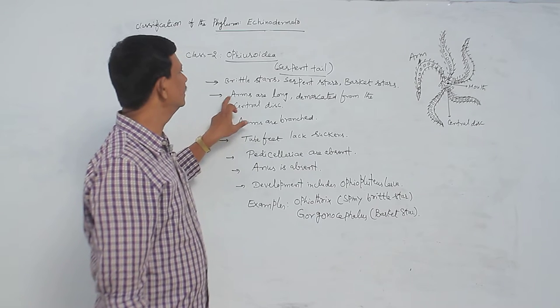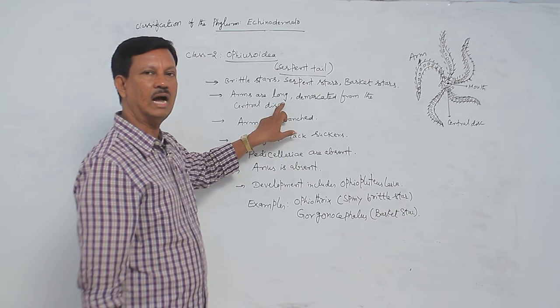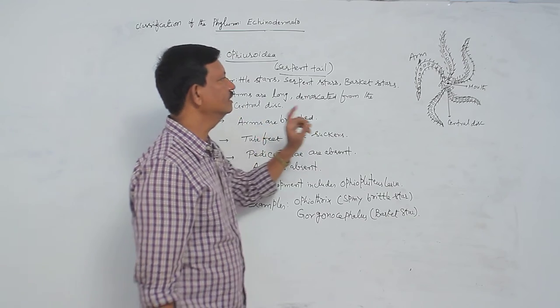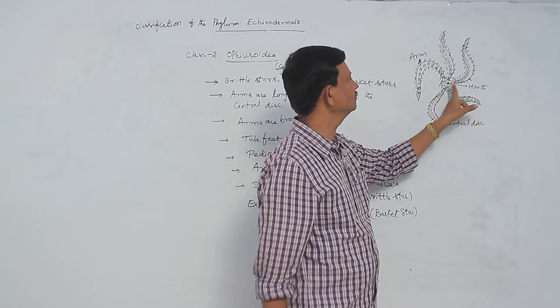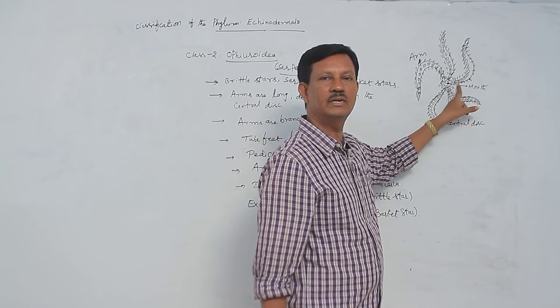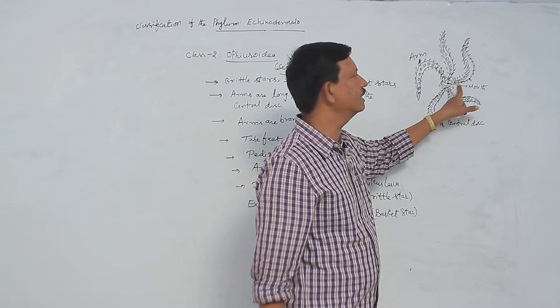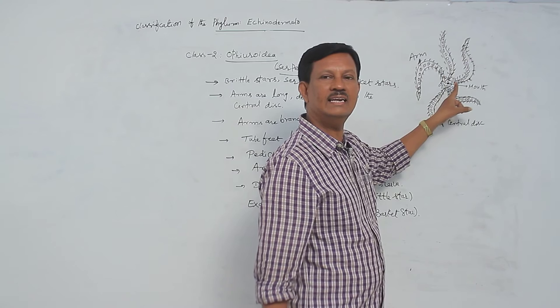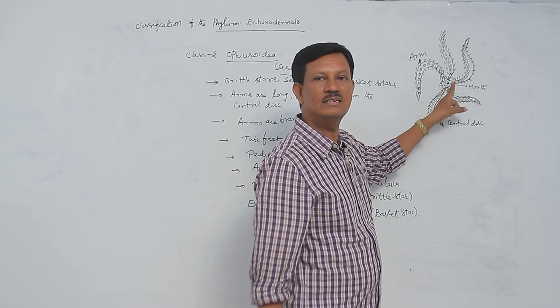Arms are present. These arms are very long and demarcated from the central disc. This is the central disc which is present in the center of the body. From the central body are arising arms. These are clearly demarcated from the central disc.